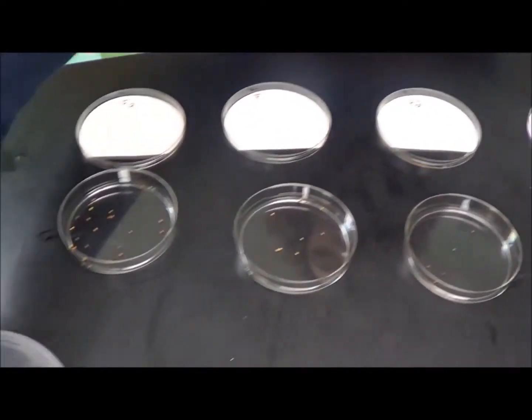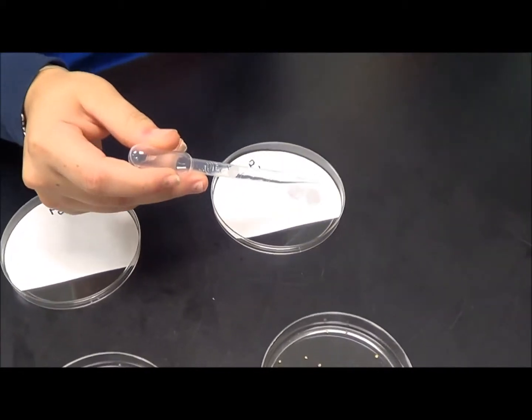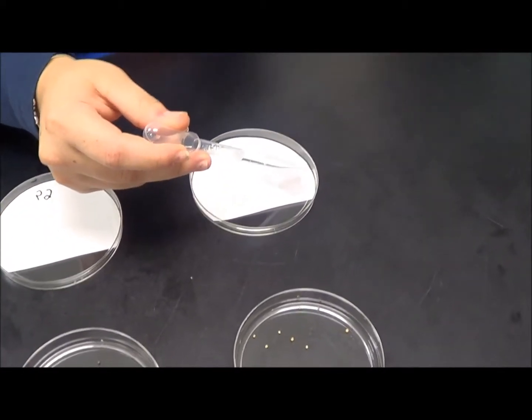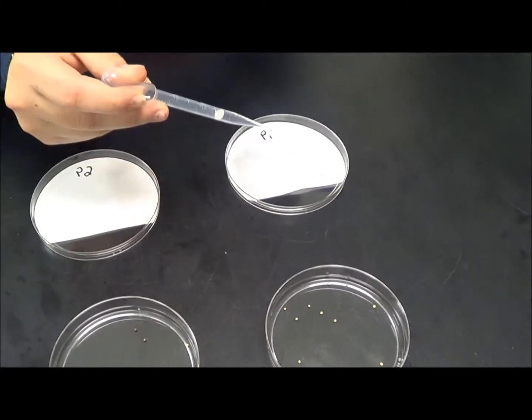Then, you take a pipette and completely saturate the paper, so that way the seeds will be able to stick to the paper, and they won't fall off later on in the experiment.